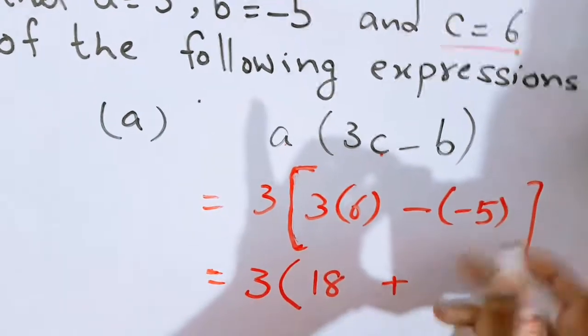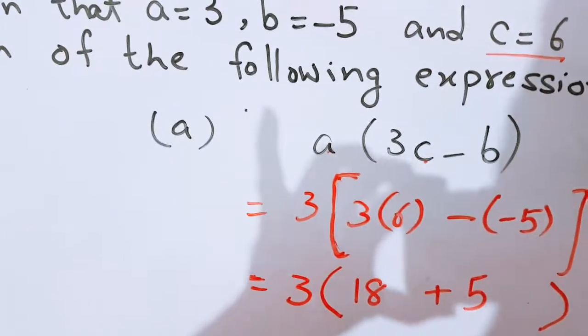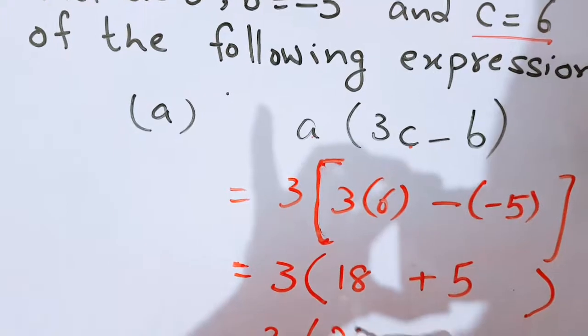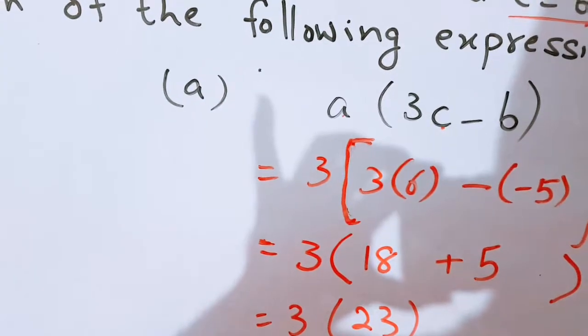Minus, minus, plus. Here also smaller brackets has been finished. Minus, minus, plus and 5 as it is. 3 here. 18 plus 5 is equal to 23. And now 3 will be multiplied with 23. 3, 3's are 9 and 3, 2's are 6. This is the answer.